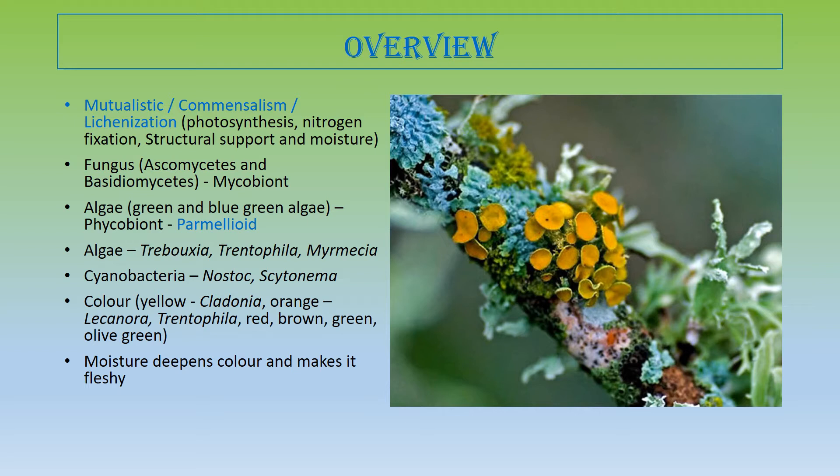Among fungal species, mostly ascomycetes are present in the lichen form. Among algal species, the green algae we mostly find are Trebouxia, Trentepohlia, and Myrmecia. Among the cyanobacterial partner, we find Nostoc, Cytonema, and Rivularia. Lichen can be of different colors depending upon the type of pigment — for example, Cladonia can have a yellow color.